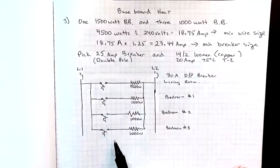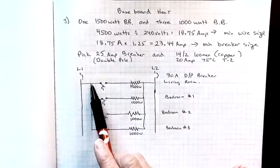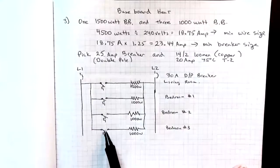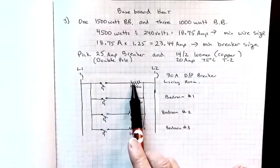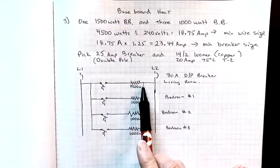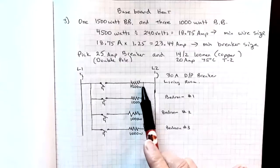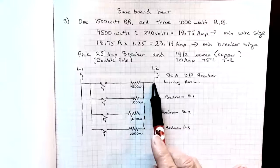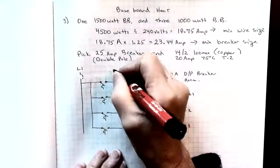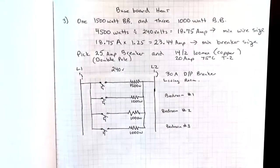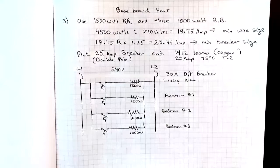This would be the schematic. So off of line one, we'd come and we'd split and go to four thermostats, one in each room. Each thermostat would have a switch leg that goes to its own baseboard heater. And then the neutral, it's not actually neutral, it's line two coming back because we actually have 240 volts between line one and line two for this installation. Hope that's helpful.